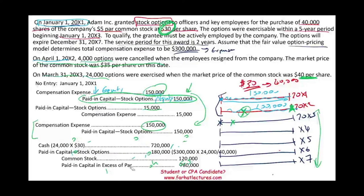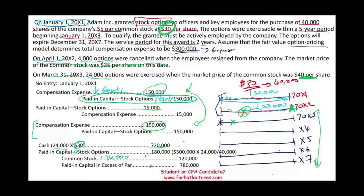The journal entry: debit Cash $720,000 (24,000 shares × $30); credit Common Stock $120,000 (24,000 shares × $5 par value); debit Paid-in Capital — Stock Options $180,000 ($300,000 × 60%); and the remaining plug goes to Additional Paid-in Capital. This exercise covered the full lifecycle of accounting for stock options — from recording compensation expense, through employee cancellations, to the options being exercised.